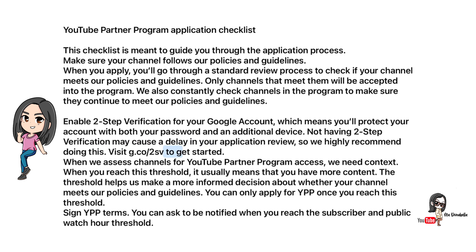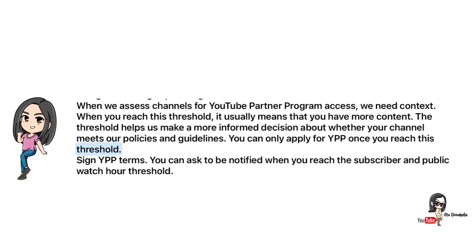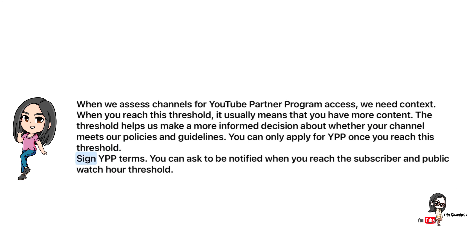Visit g.co/2sv to get started. When YouTube assesses channels for YouTube Partner Program access, they need context. When you reach the threshold, it usually means you have more content, which helps them make a more informed decision about whether your channel meets policies and guidelines. You can only apply once you reach this threshold.